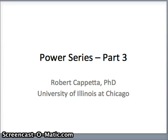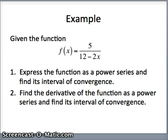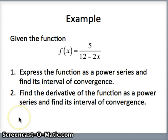This is Bob Capetta from the University of Illinois at Chicago and this is another lesson on power series. We're given the function f of x equals 5 over 12 minus 2x and the goal is to express that function as a power series and find the interval of convergence. Then after we do that, we want to find the derivative, take its derivative, express that as a power series, and find the interval of convergence for that derivative function.